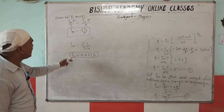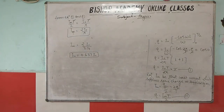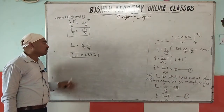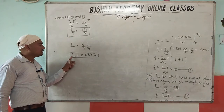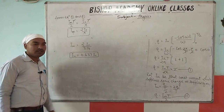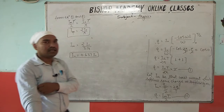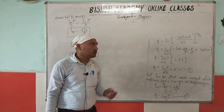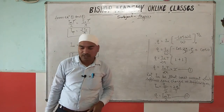This is the mean current in terms of peak current — I_m = 0.637·I₀ — and this is the mean value of AC. Numerical problems on this topic will be covered in the next classes. This part ends here. Thank you, have a nice day.